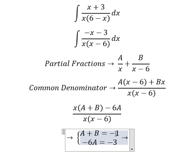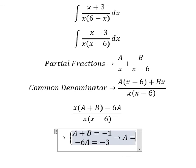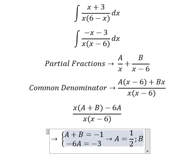Now we can find the solution of A and B. So A equals to 1 over 2, B equals to negative number 3 over 2.